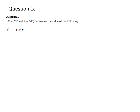If theta is equal to 23 degrees and alpha is equal to 51 degrees, determine the value of sine squared theta. Now, when you are squaring a trig ratio, you are squaring the value of the sine of theta, which in this case is the sine of 23, and you are squaring that value.